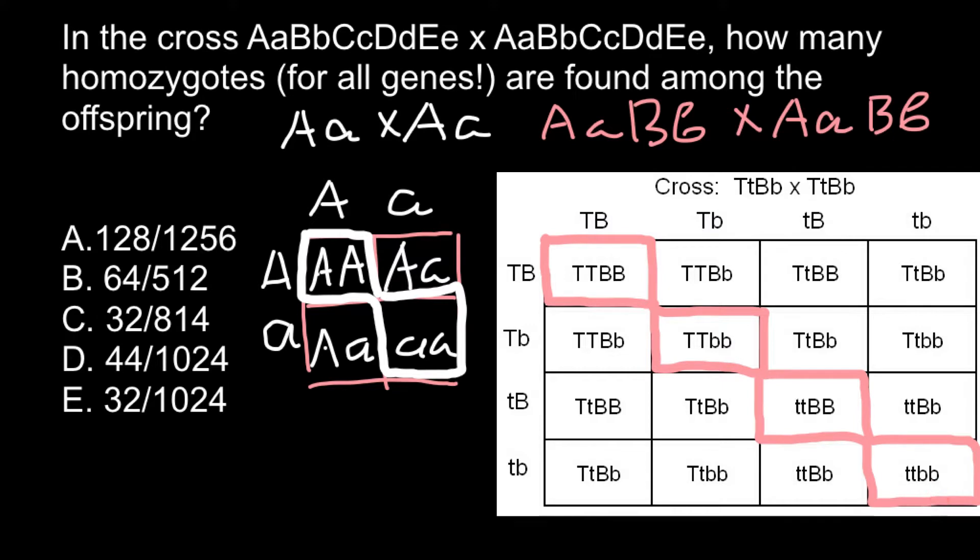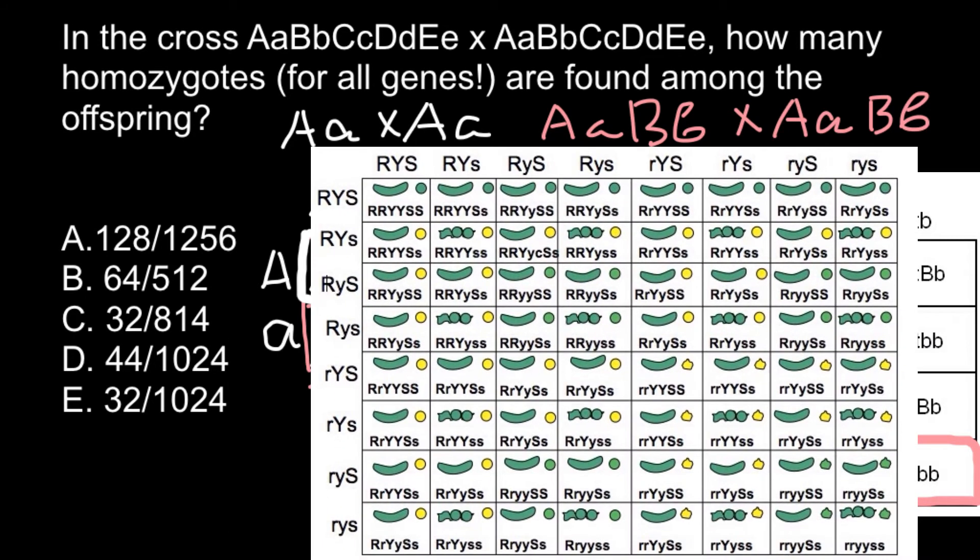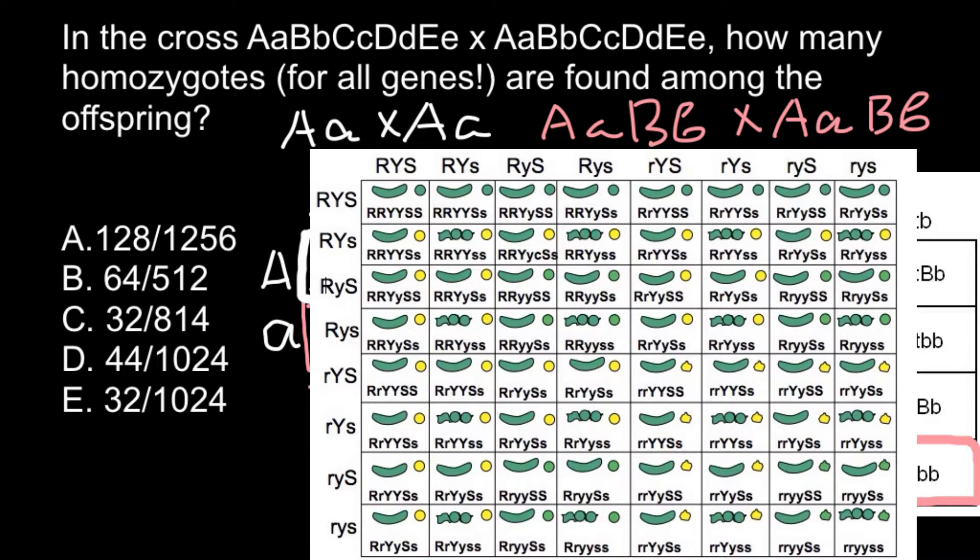Now we see the pattern. Take a look at this trihybrid cross. This time we will have one, two, three, four, five, six, seven, eight by eight Punnett square, and all our homozygotes would be here in this diagonal—I mean all hybrids that would be homozygous for all three genes.